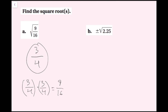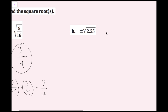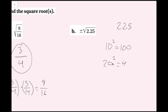For part b, I want plus or minus the square root of 2.25. This might look tricky because it's a decimal, but it's not as hard as it seems. Since there are two digits behind the decimal, I can think of a number with one decimal place times itself. I can also think of this by ignoring the decimal first — treating 2.25 as 225 — and figure out what number multiplied by itself equals 225. One approach is to square factors of 10: 10 squared is 100, and 20 squared is 400, so the square root of 225 is between 10 and 20.